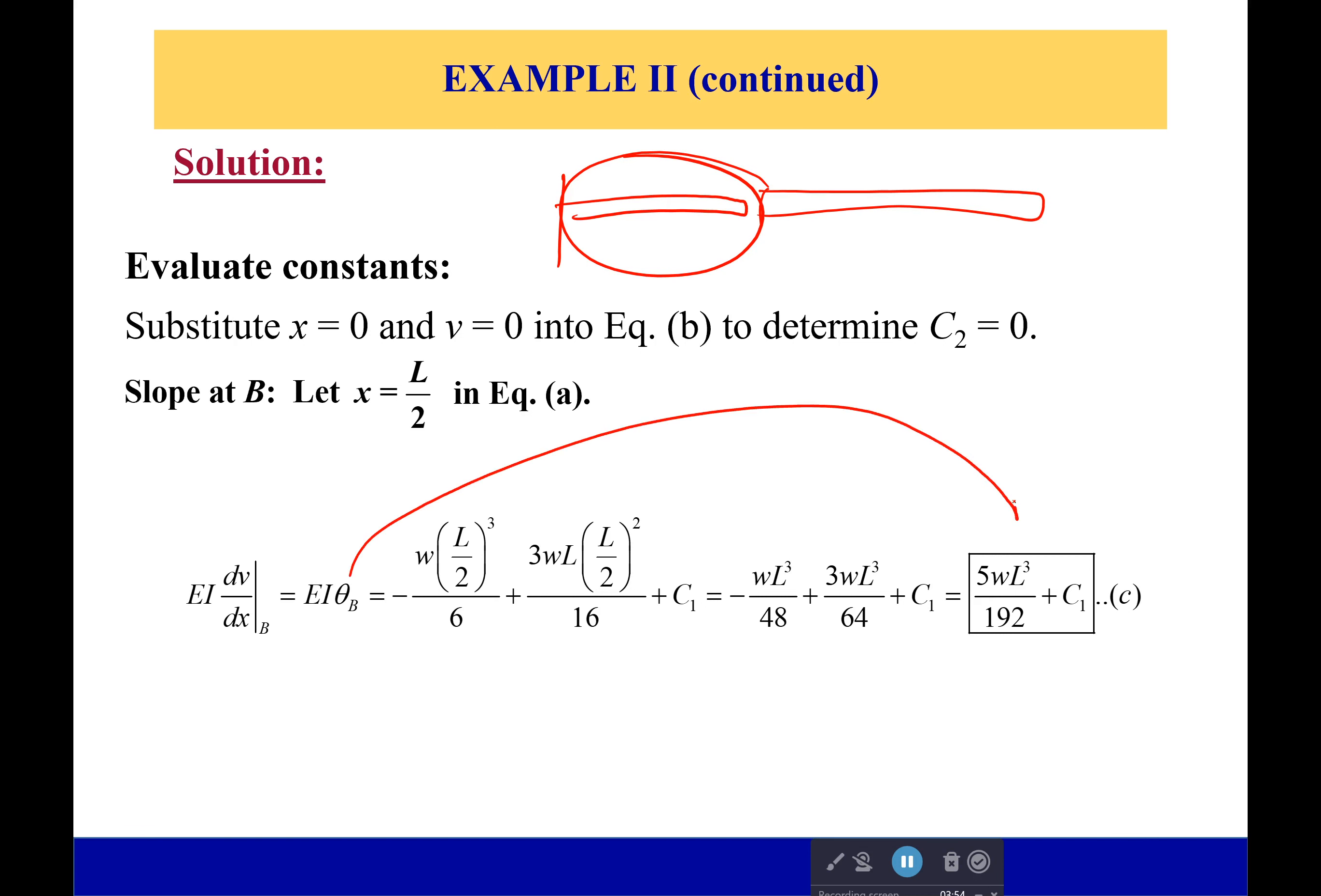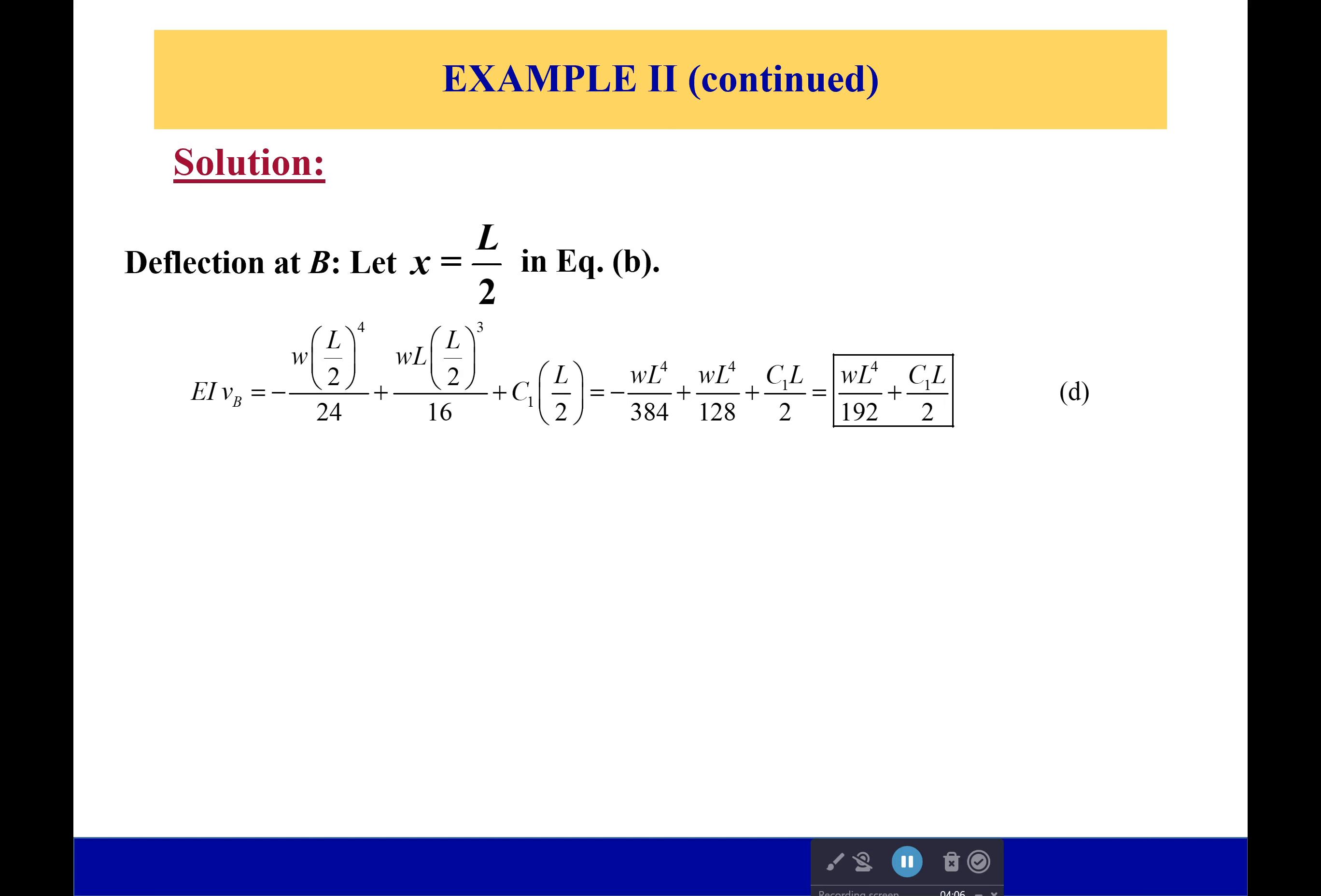If you also want to, we can find the deflection at B. So once again, we've got everything we want, but still we have that constant C1 that we have to get rid of. So how are we going to do that? Well, we're going to do it by considering the second beam segment—this is BC, going from L over 2 to L.